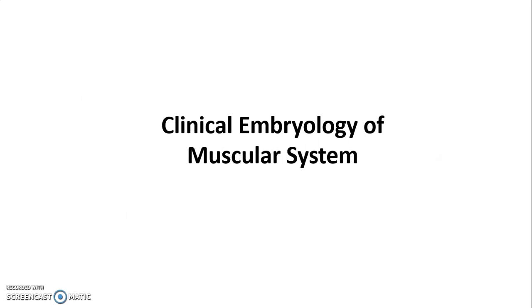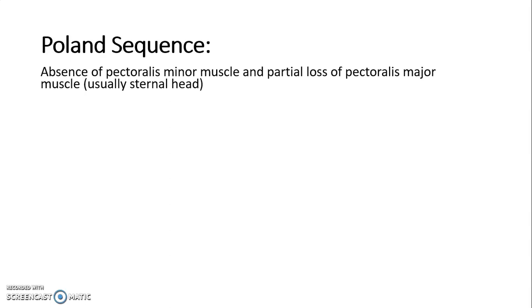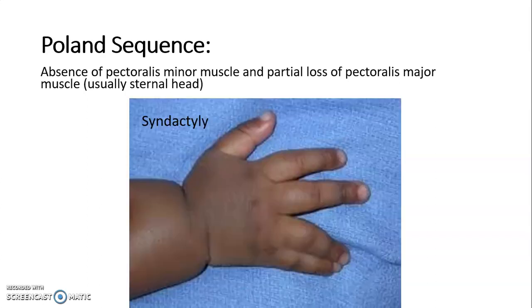Now coming to clinical embryology of the muscular system. First, we have Poland sequence. Poland sequence is characterized by absence of the pectoralis minor muscle and partial loss of the pectoralis major muscle, usually the sternal head. As seen in the picture, the nipple and areola are displaced on the affected side, or they can be absent. Along with this, there can also be syndactyly — fusion of one, two, or more digits.